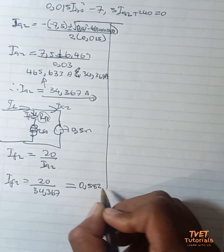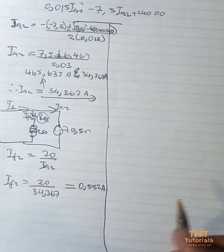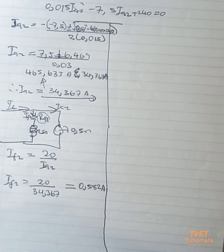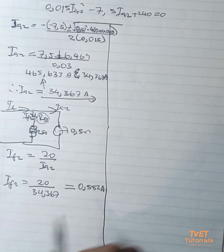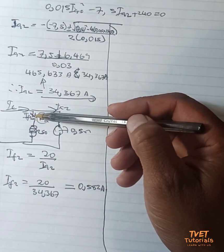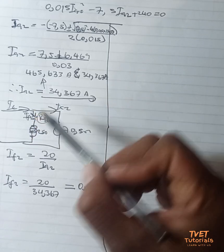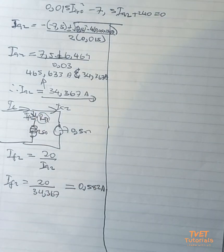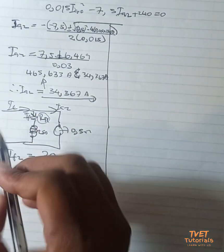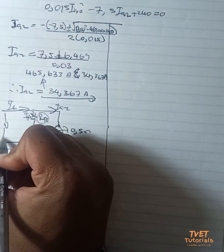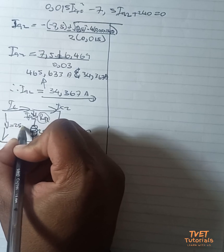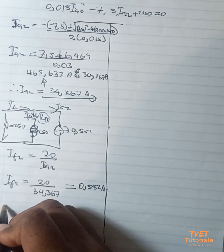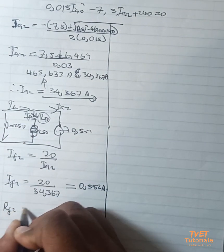So you have that value, it means you can then calculate this whole resistance, because we know that the voltage is equal to 250 volts. So we can calculate that. R_field2 is then equal to V divided by I_field2,